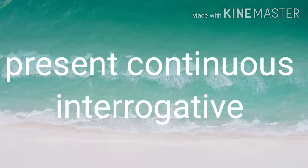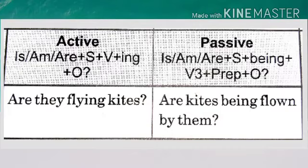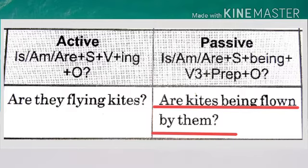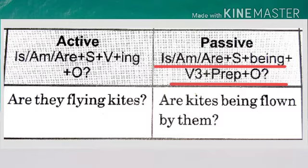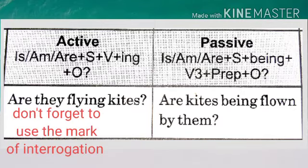Now let's do the interrogative sentence in present continuous tense. 'Are they flying kites?' The sentence begins with 'are,' so in present continuous passive, the answer also begins with is/am/are. 'Kites' is plural, so we use 'are.' The passive rule is: is/am/are + subject + being + third form of verb + preposition + object. So 'Are they flying kites?' changes to 'Are kites being flown by them?'